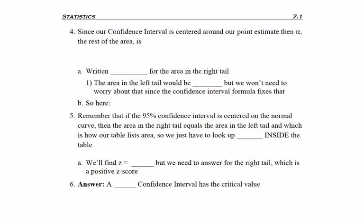So continuing with this: since our confidence interval is centered around the point estimate, then specifically that alpha that we found—the area that's not in this centered portion—is split in half between the two tails of the normal curve. We have our middle confidence area, and alpha has to fit on both sides, so therefore it's split in half.